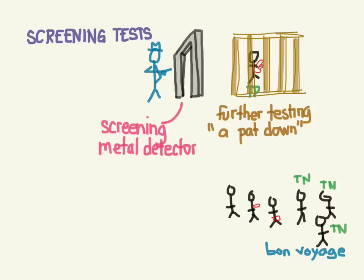So what a screening test does is it identifies people who are more likely to have a condition. It separates a population into those for whom more checks are going to be needed and those who don't need any more checking. The reason we want to do this is because that subsequent test could be very invasive, expensive, or time-consuming, and we can't afford to do that on everybody — but we want to know which people we should do it on, and screening tells us.